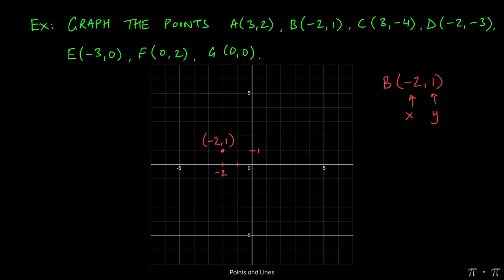For B, we were given the coordinates (-2,1). The first coordinate is the x-coordinate, the second coordinate is the y-coordinate. Since x is negative, we move to the left by two units instead of to the right, and then we move up by one unit because the one is positive. This gives us the coordinates for the point B.